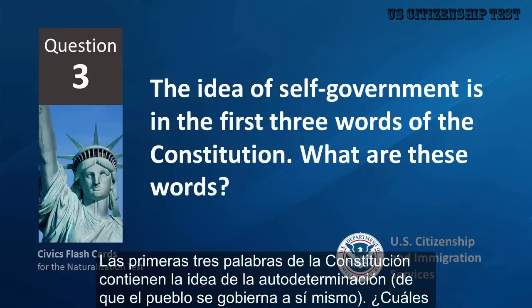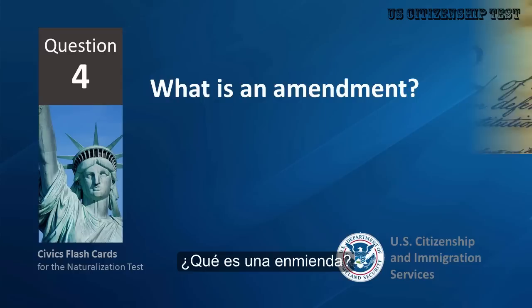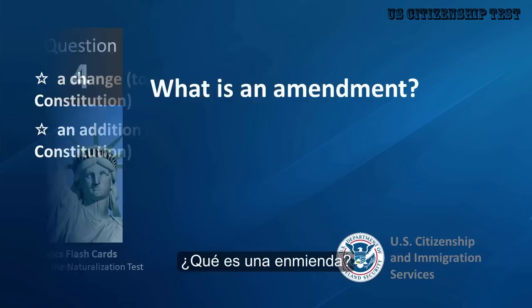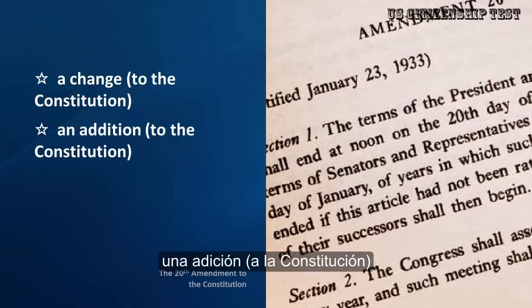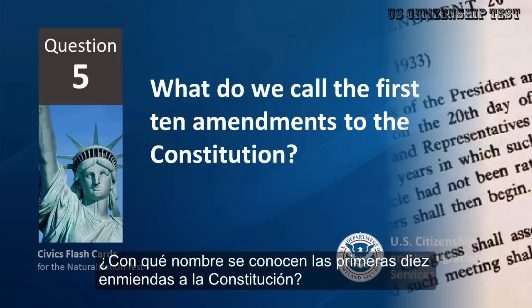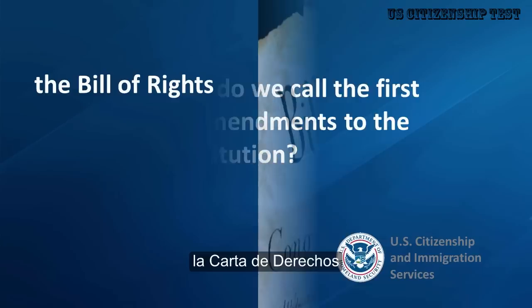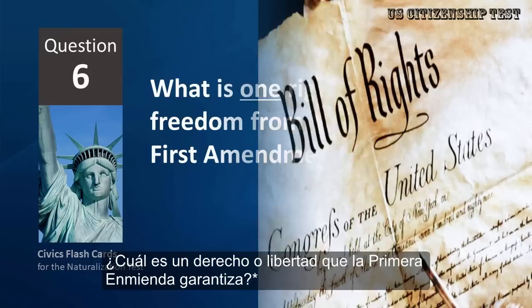The idea of self-government is in the first three words of the Constitution. What are these words? We the people. What is an amendment? A change to the Constitution, or an addition to the Constitution. What do we call the first ten amendments to the Constitution? The Bill of Rights.